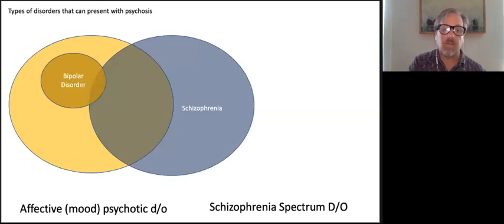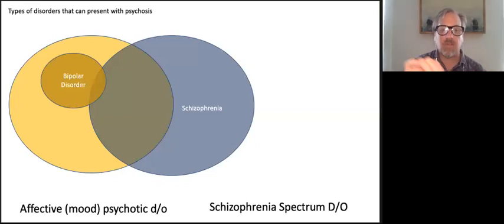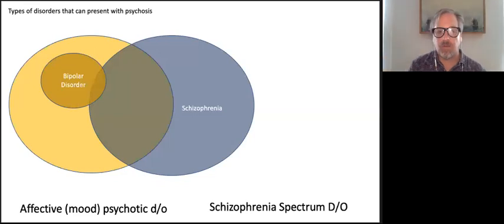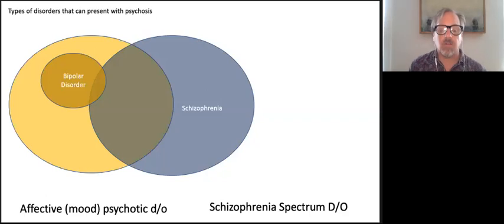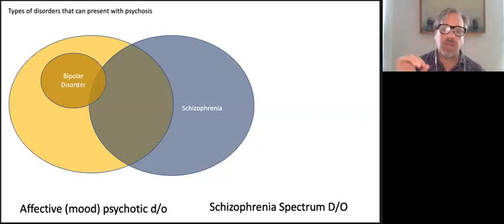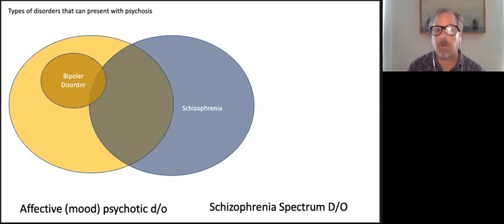Bipolar disorder tends to fall more on the affect or mood disorder side, where the psychotic symptoms tend to be episodic — meaning they only occur when somebody is in an acute mood episode. Typically when someone is presenting with mania, but sometimes with severe depression, you can see some mood congruent — dark, guilty, or nihilistic — delusional material. For example, someone might have a hallucination that they are smelling their own flesh rotting. But mostly we see psychotic symptoms in the manic phase, such as grandiose delusions that they are the next Mark Zuckerberg.